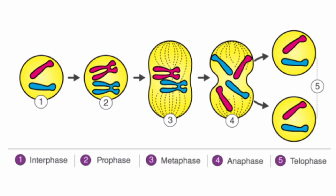During Anaphase, the spindle fibers shorten and pull the chromatids to the opposite ends, or poles, of the cell. As soon as they separate, the chromatids become chromosomes.